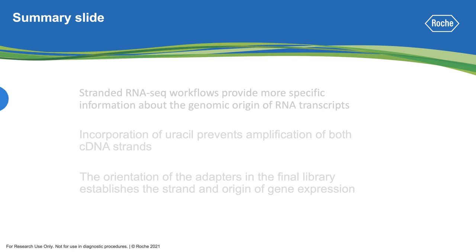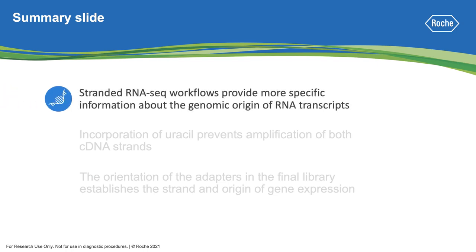Stranded RNA sequencing workflows provide more specific information about the genomic origin of RNA transcripts. This strand information is critical to retain in order to identify which genes are expressed in a biological sample if they are on opposite strands and overlap. Additionally, keeping transcript strand information is critical to understanding differential gene expression in cases where genes overlap.